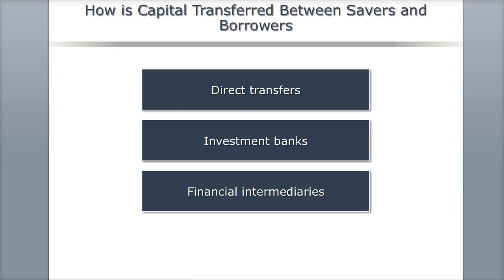First, let's talk about how capital is transferred between savers and borrowers. We have three possibilities: direct transfers, investment banks, and financial intermediaries.